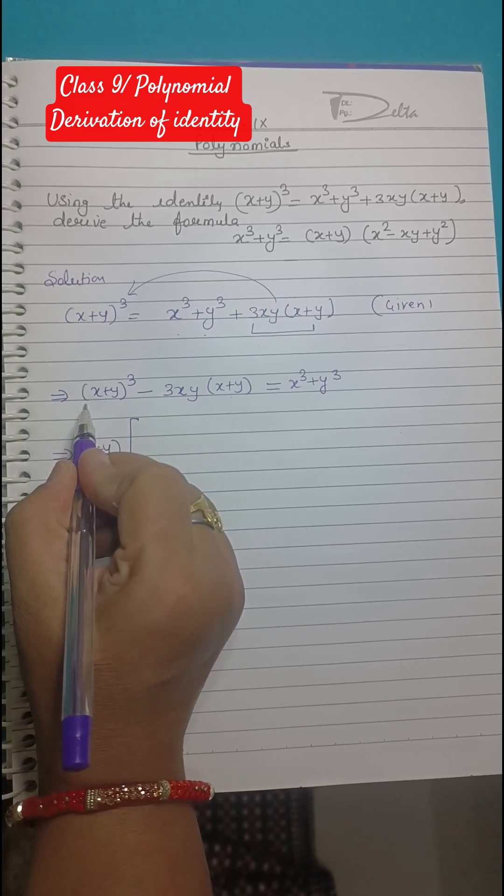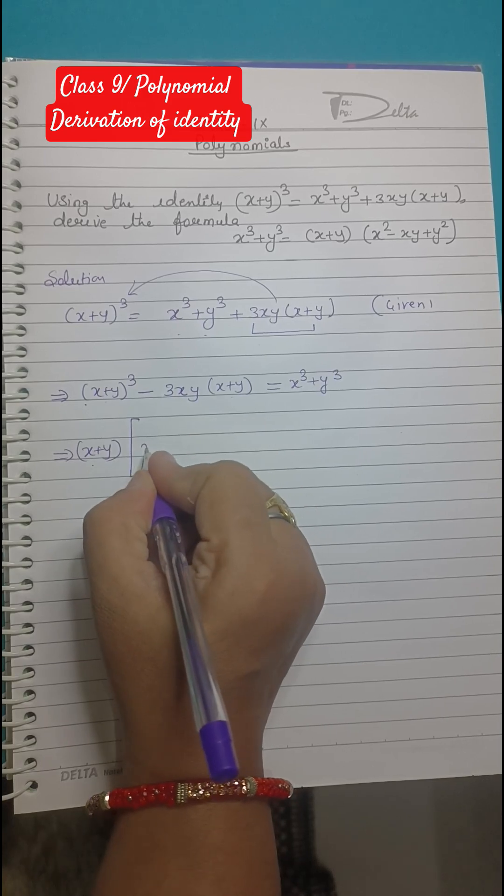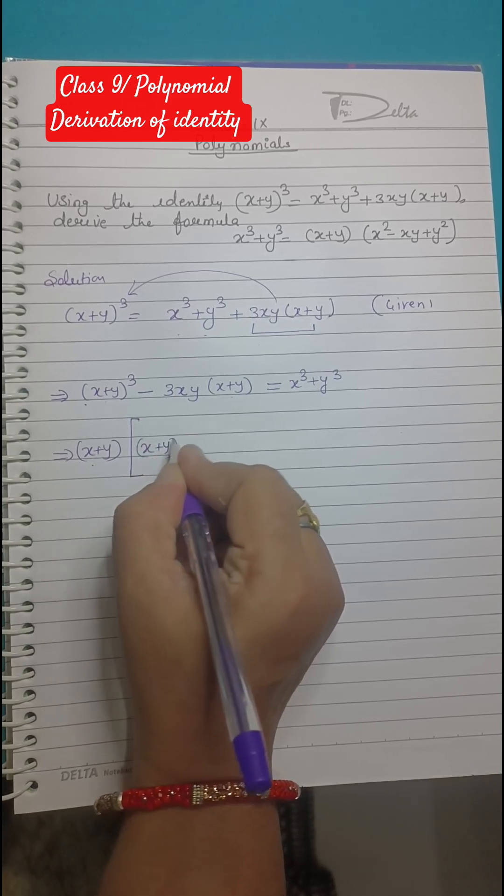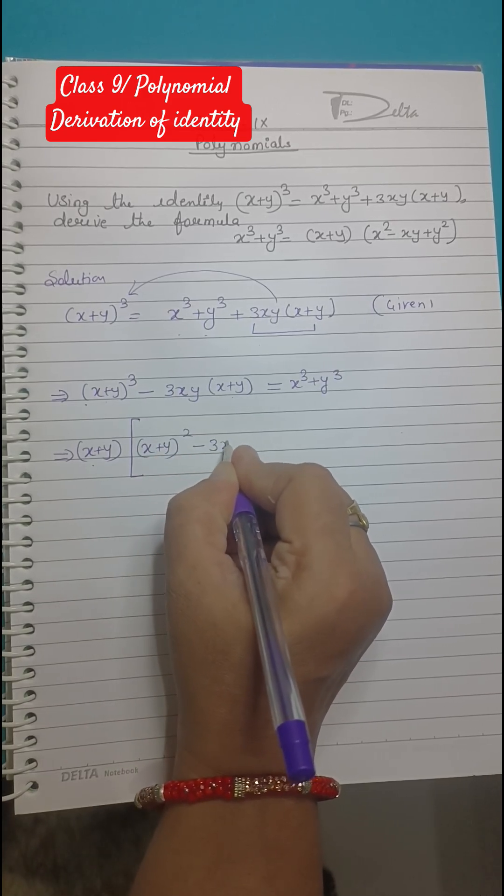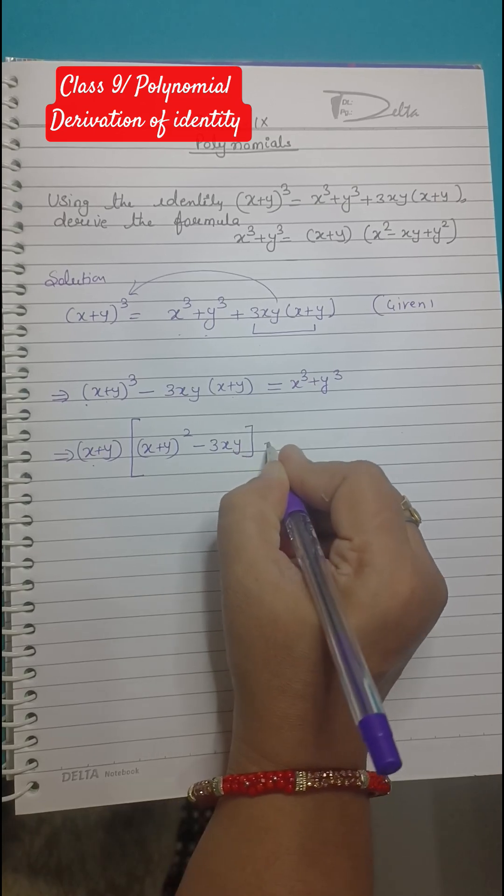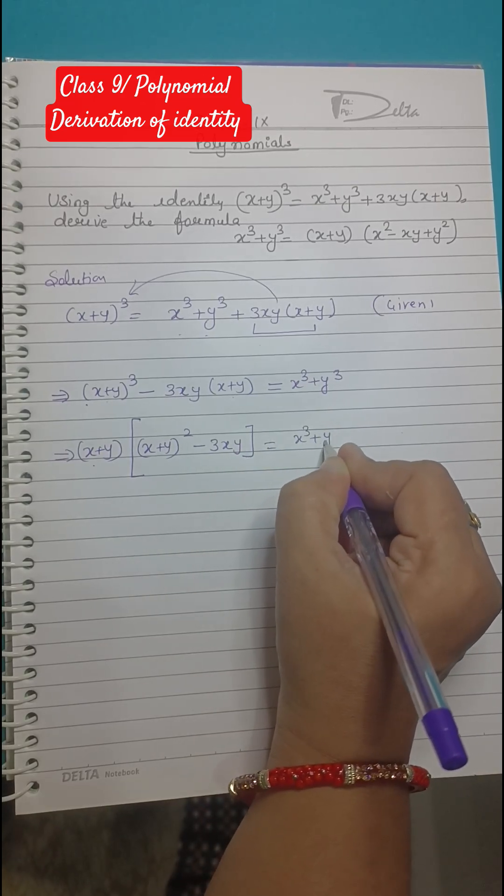Just put this expression outside. Now when you will divide (x+y)³ by (x+y), you will get (x+y)² and here only 3xy equals to right hand side, we will copy as it is.